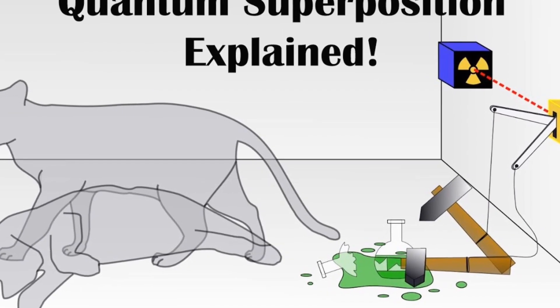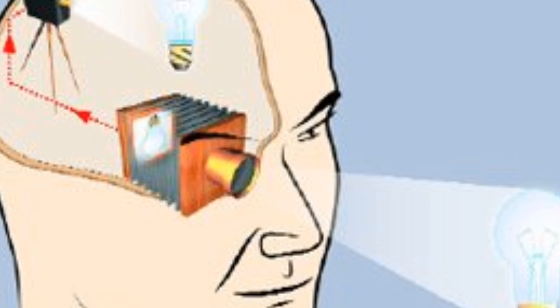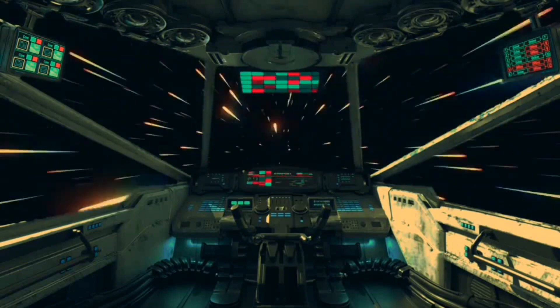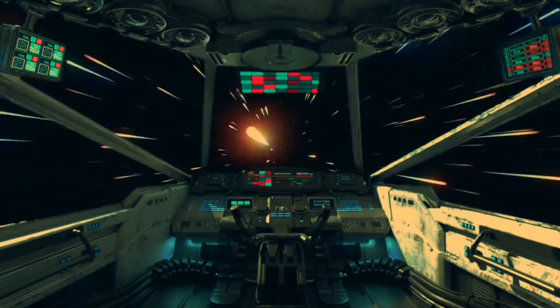The quantum phenomenon of superposition is a consequence of the dual nature of waves and particles. In order for an object to have a wavelength, it must extend over some region of space, which means it occupies many positions at the same time.